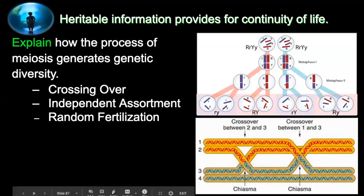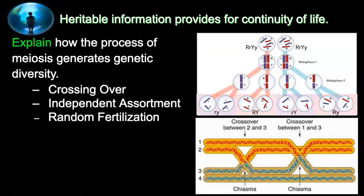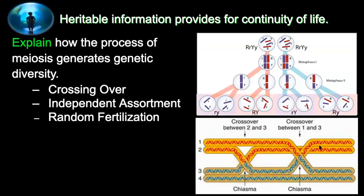A question that comes up a lot in FRQs is: how do we get genetic diversity through meiosis? There are three components to talk about, and there are specific places these occur. In prophase one, you have homologues — dads and moms — coming together, and crossing over occurs. Do you guys see this slide? Sometimes I accidentally grab the whiteboard.